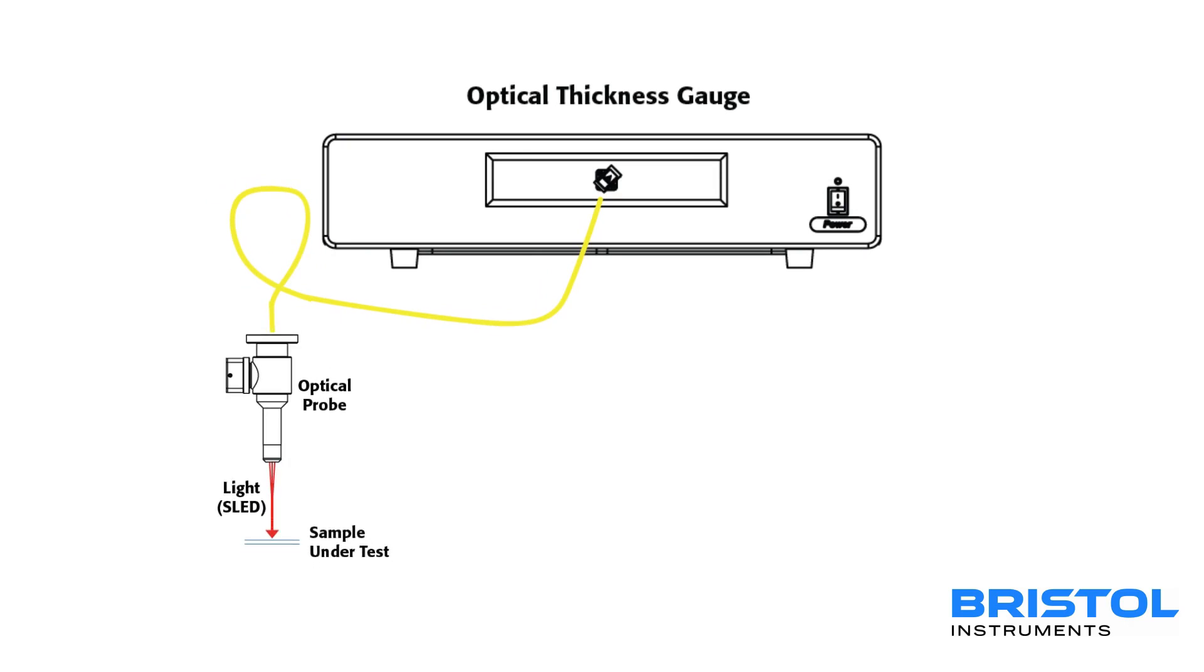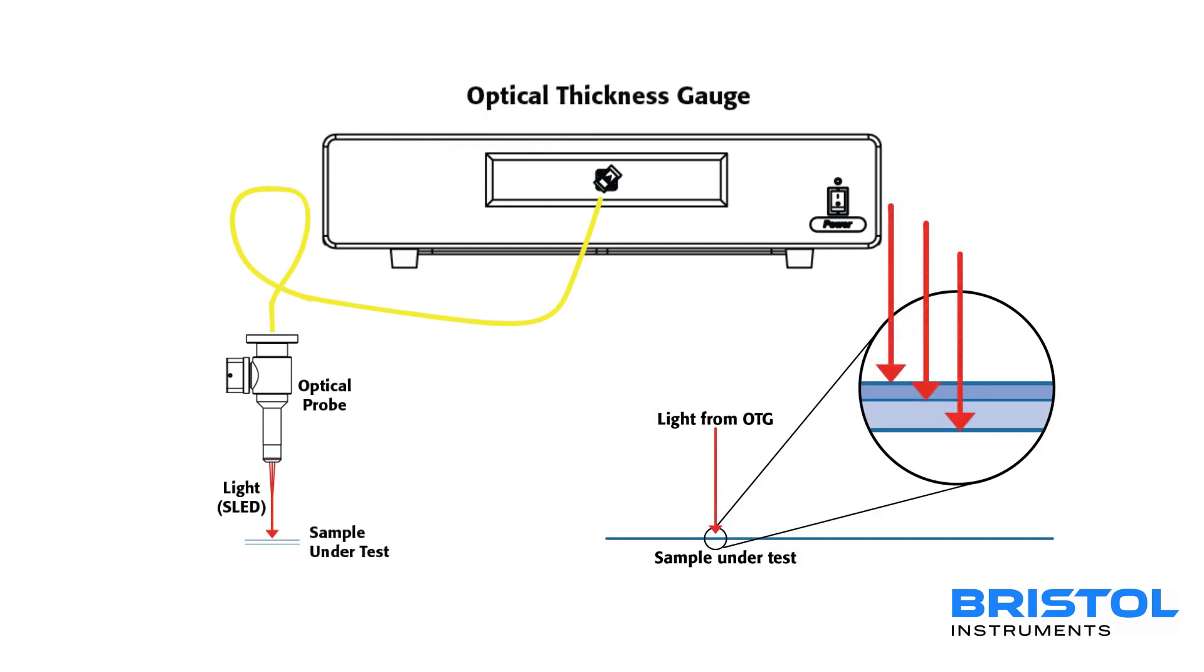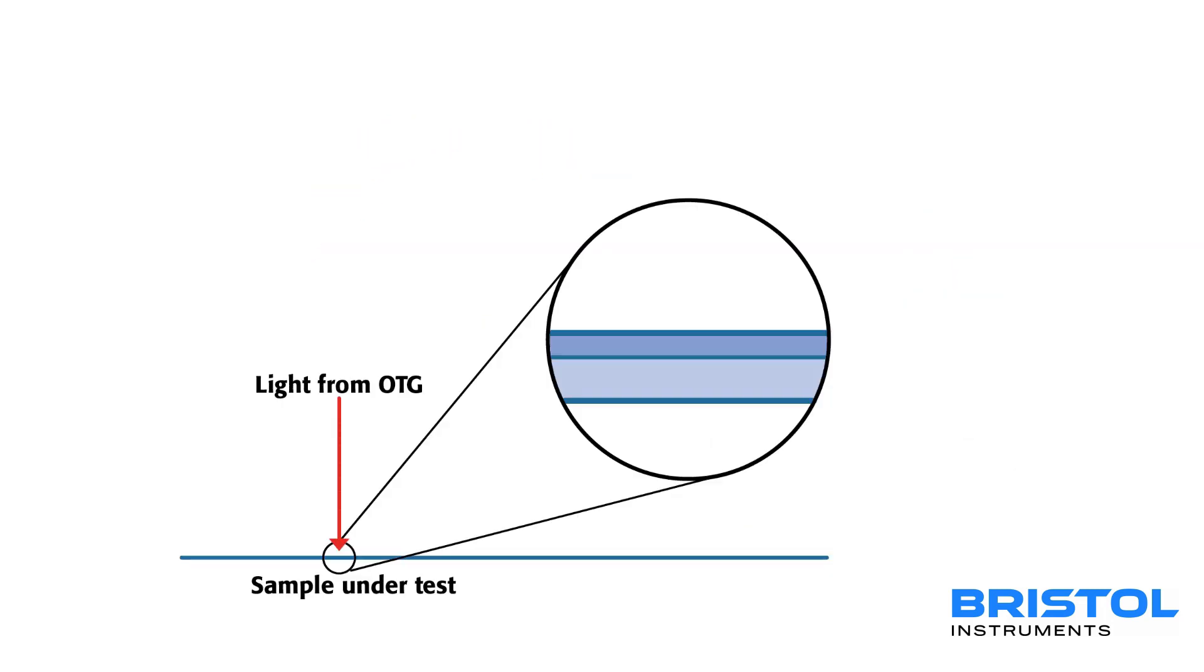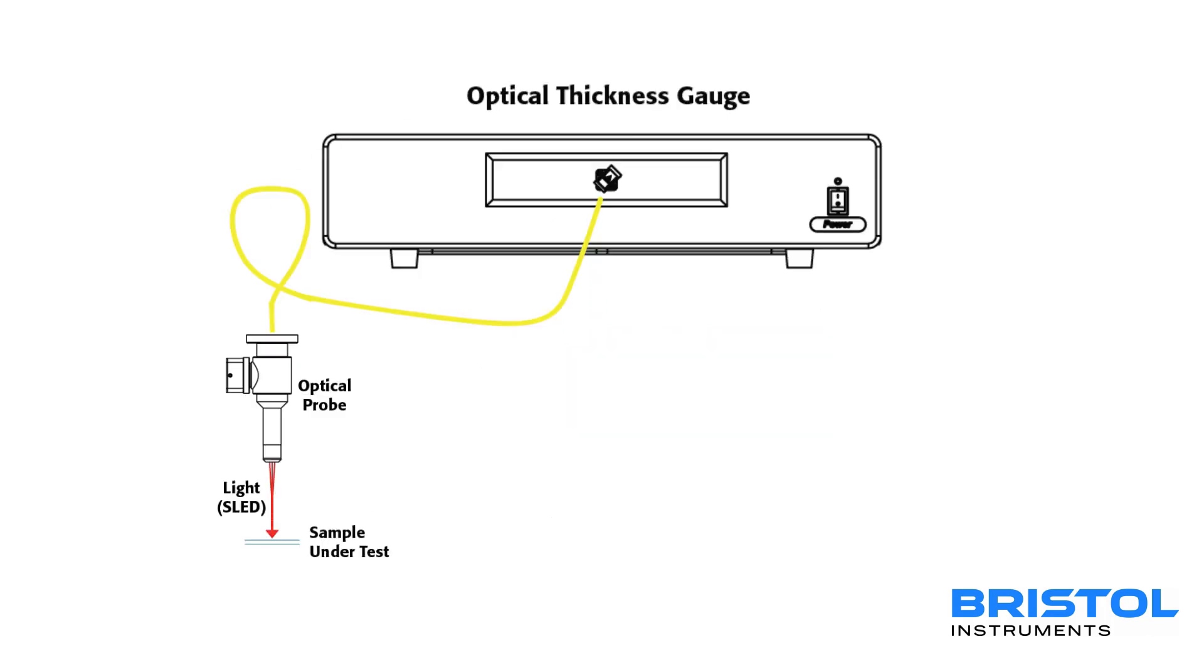Light travels from the controller through the probe and then into the part. At this point, all reflections from the part come back into the probe, through the fiber, and back into the interferometer.